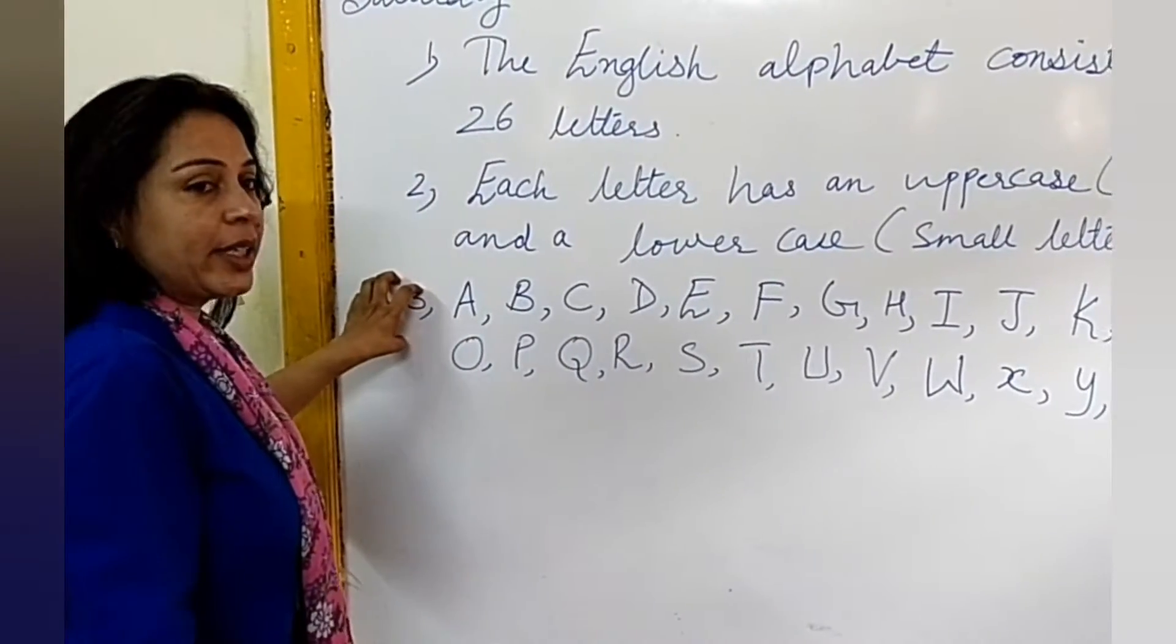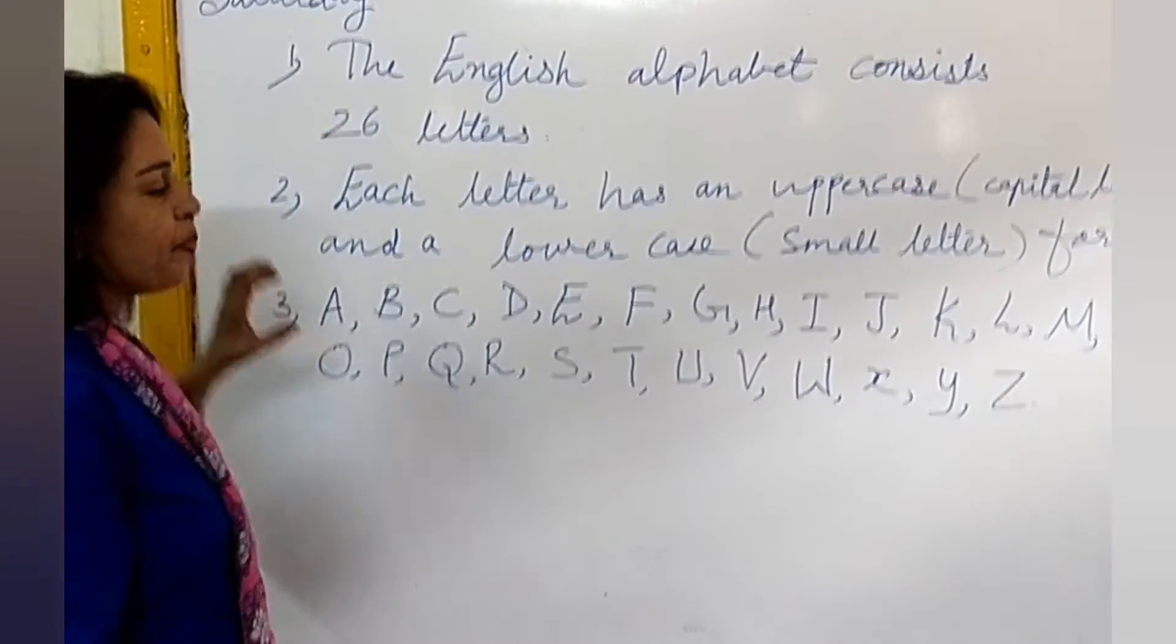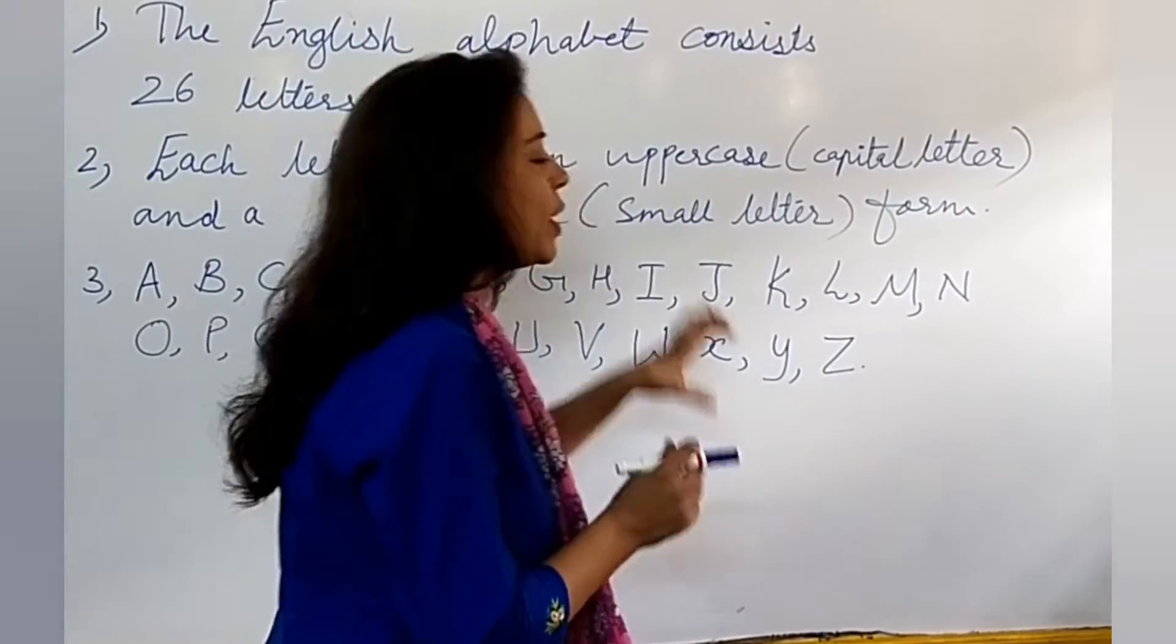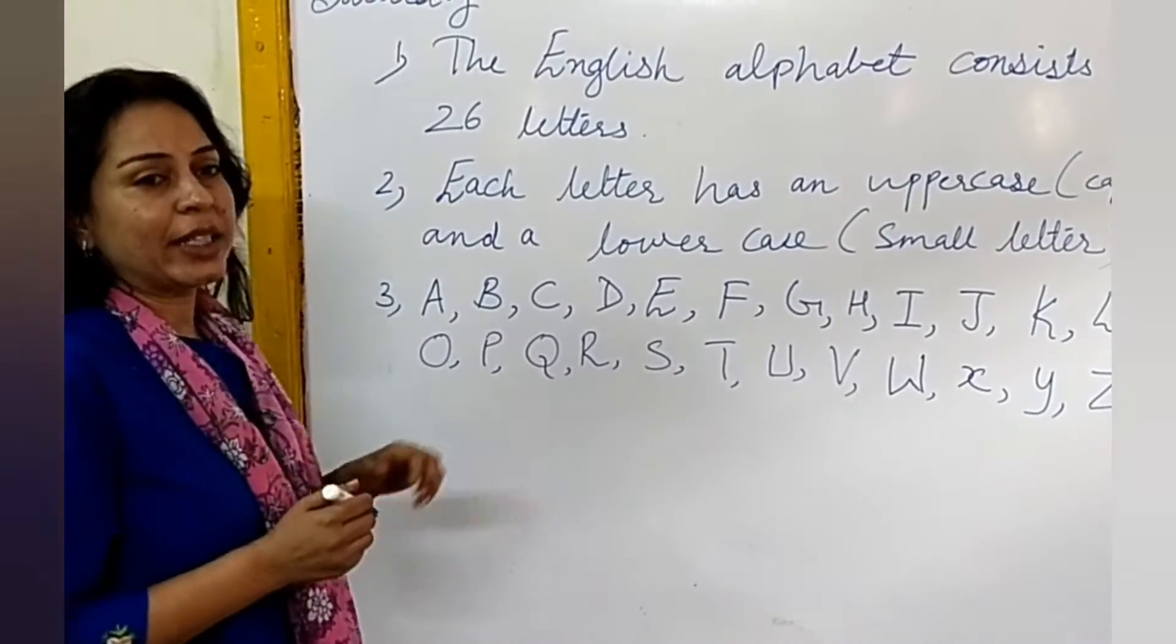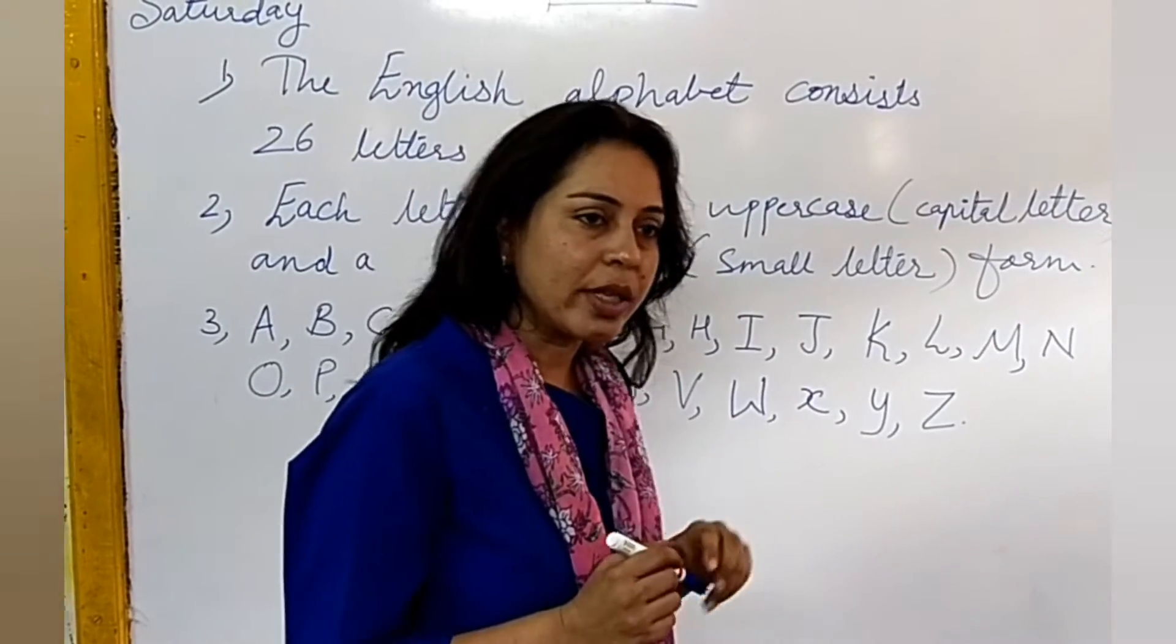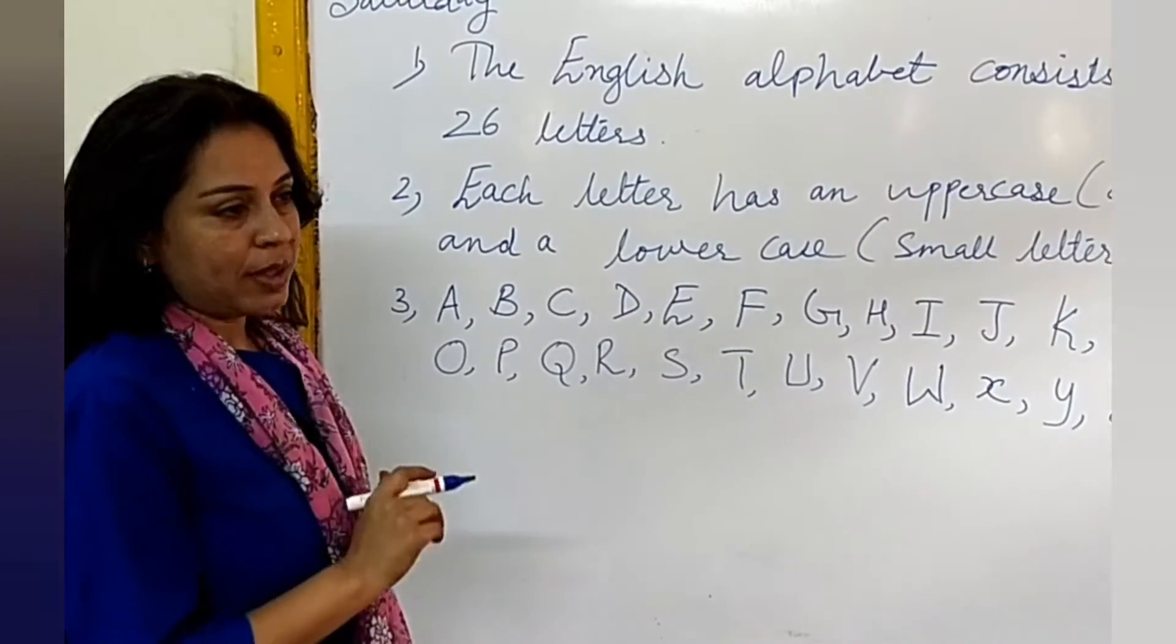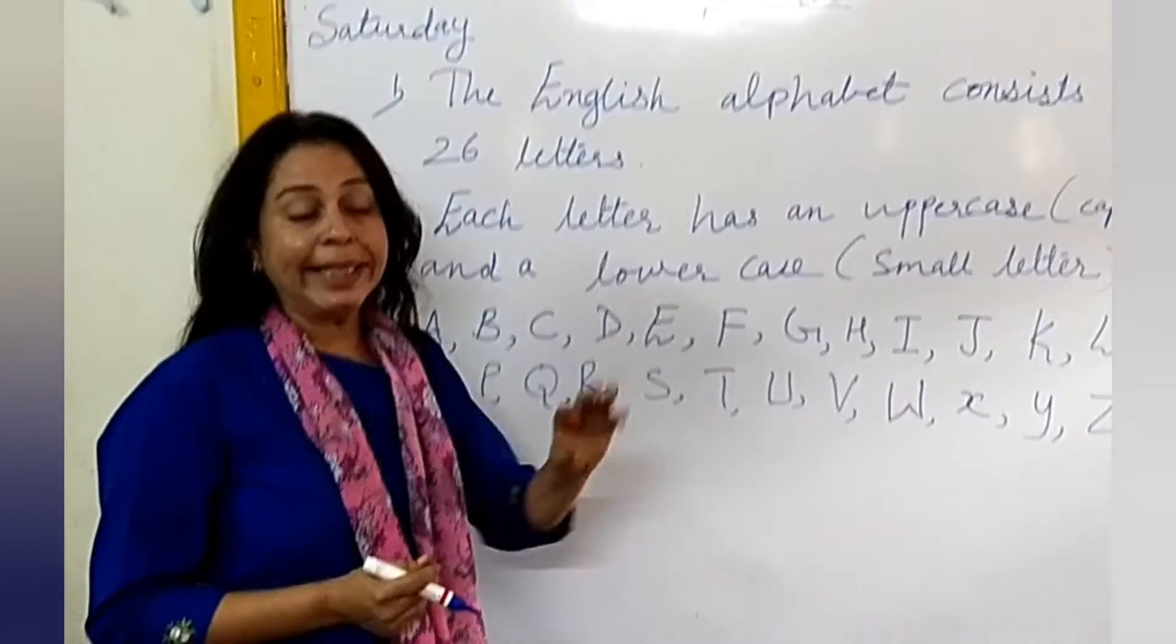Third point is, I have written here alphabet, 26 letters. Now, from these 26 letters, we find out vowels and consonants. Now, first we find out vowels. There are 5 vowels in the English alphabet.